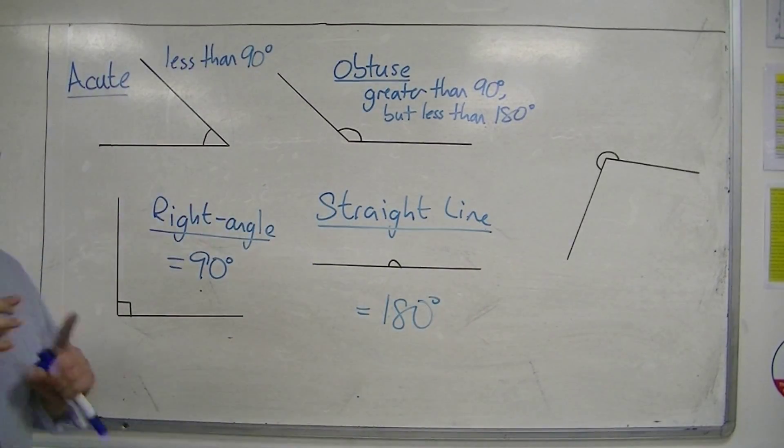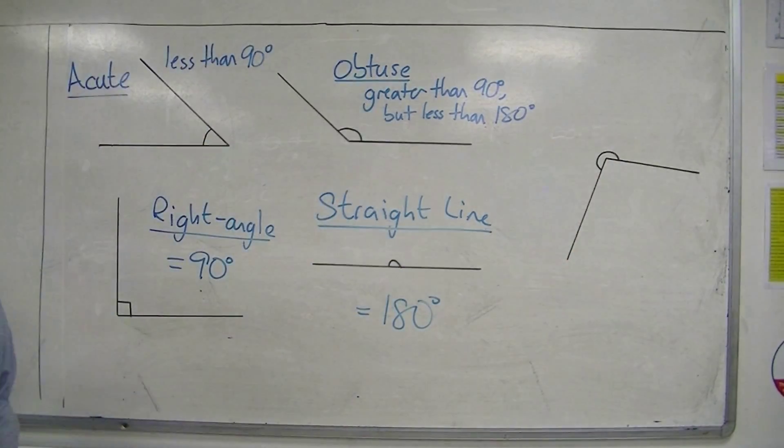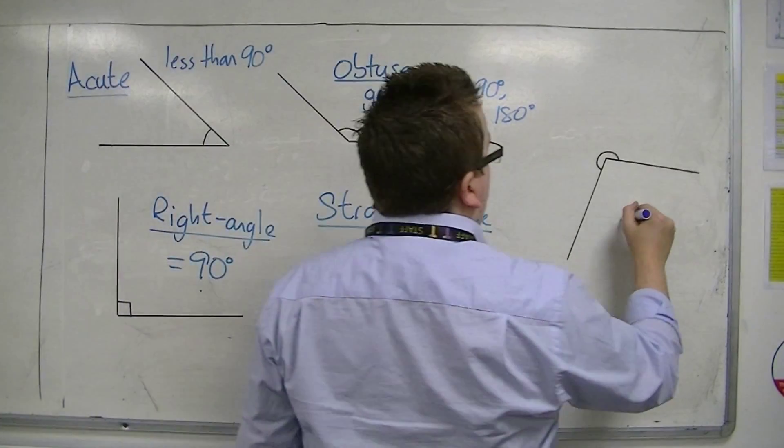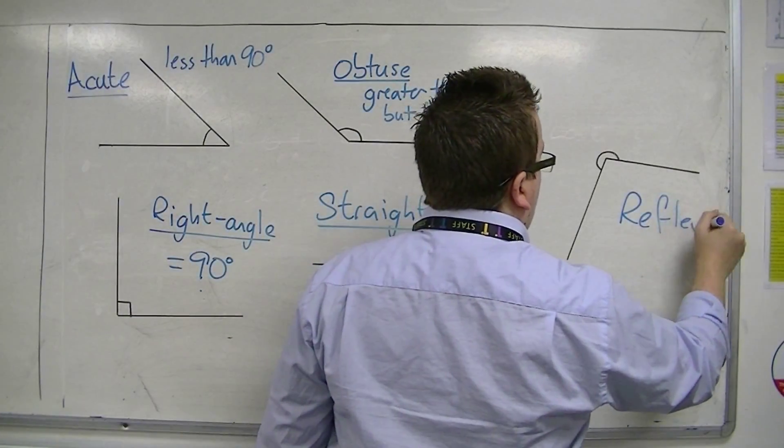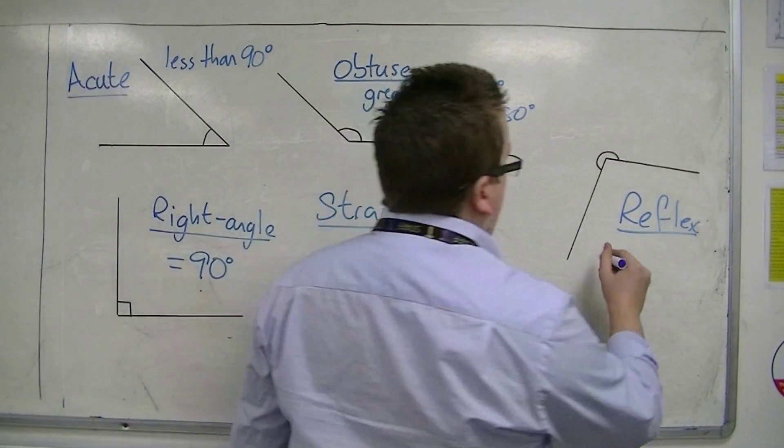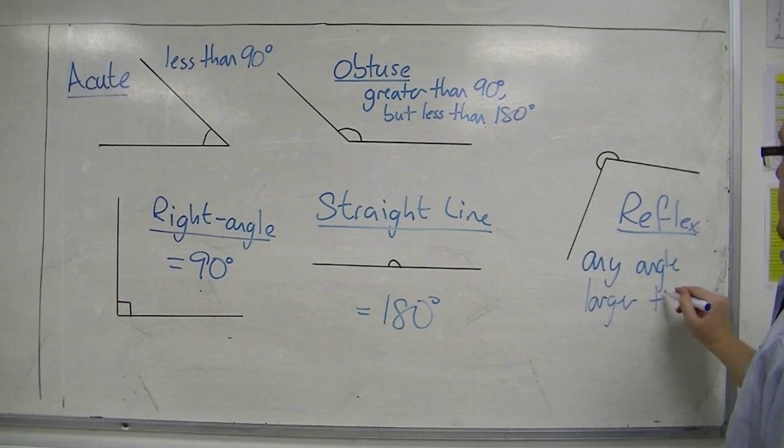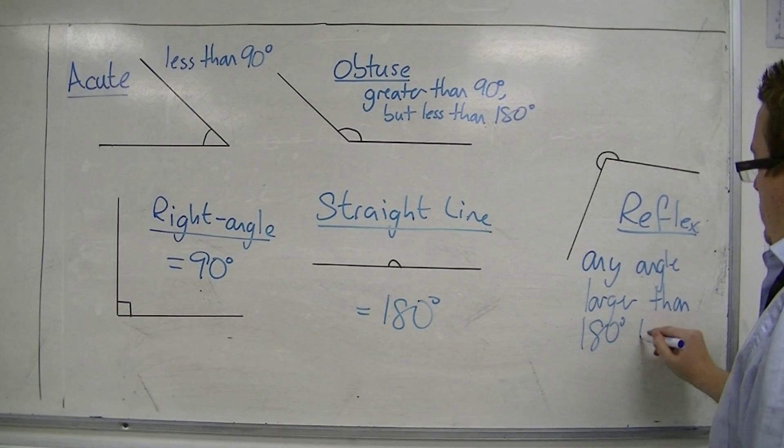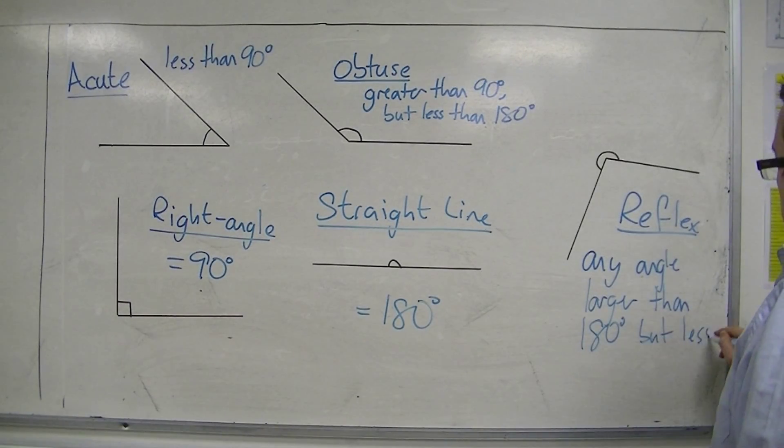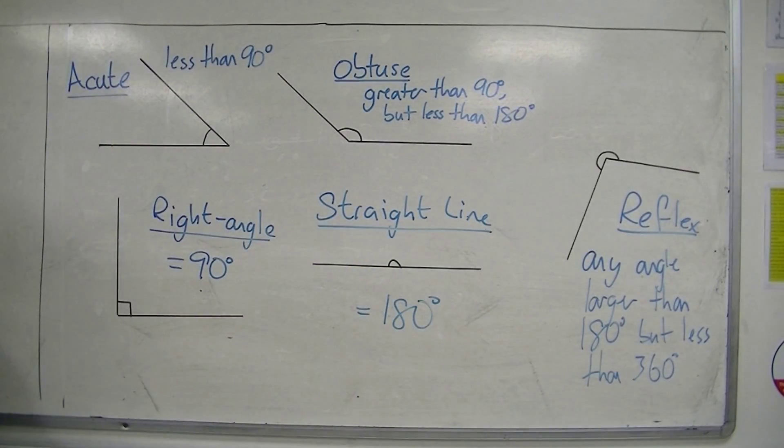But once you go beyond 180 degrees and you keep bending around like this, then we know that as a reflex angle. That covers any angle that is larger than 180 degrees but less than 360. If you get to 360 degrees, then you've got all the way around. We don't really count that so far.